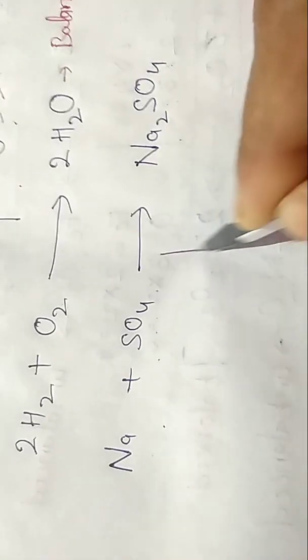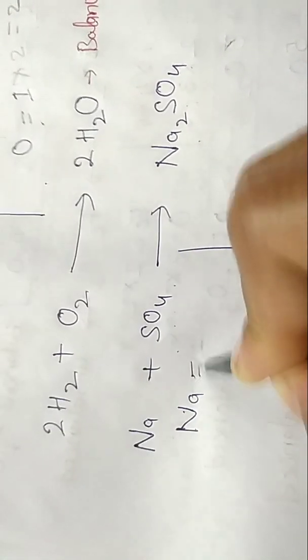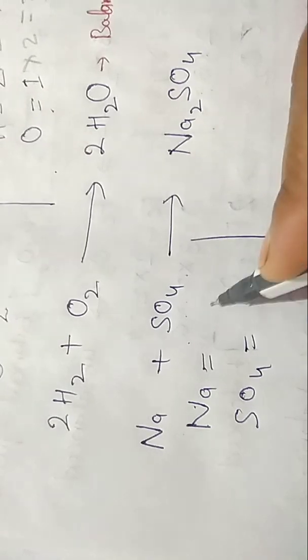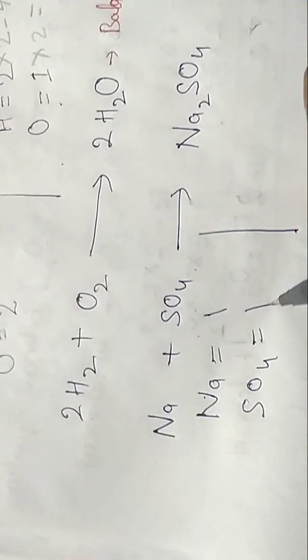To balance it, first we have to divide into two parts. Write down atoms' names: Na and SO4, and their numbers also. Na is one here, SO4 is one here.